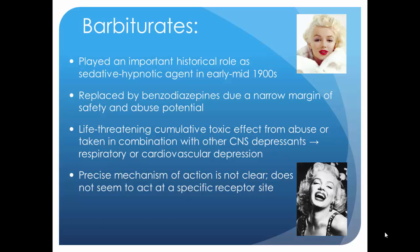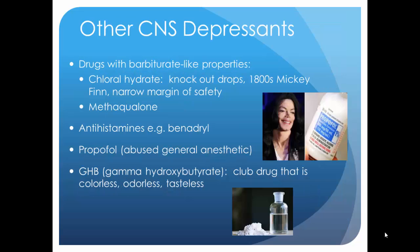After high doses or chronic and prolonged use of barbiturates, you can experience respiratory and cardiovascular depression, slip into a coma, and die. The exact mechanism of action is not entirely clear, but at high doses we believe it interacts with the GABA receptor site. Some other CNS depressants include chloral hydrate, which is old school and also known as knockout drops.